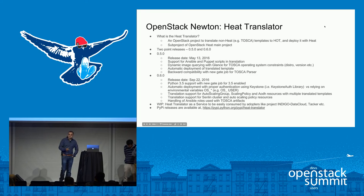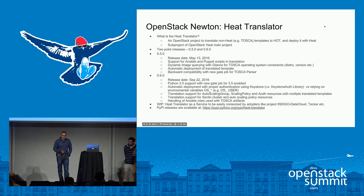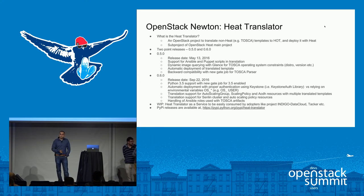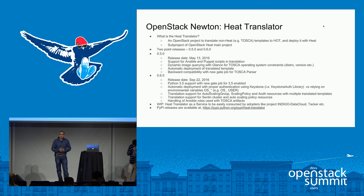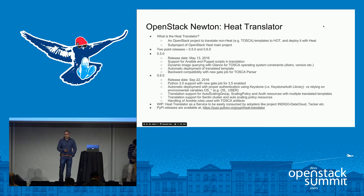We also added automatic deployment during the same timeframe, and the project is backward compatible. A new gate job was added to Heat Translator so that every time we update code in Heat Translator, it runs against the TOSCA Parser gate to make sure nothing in TOSCA Parser is breaking Heat Translator. Any issues are fixed before release.